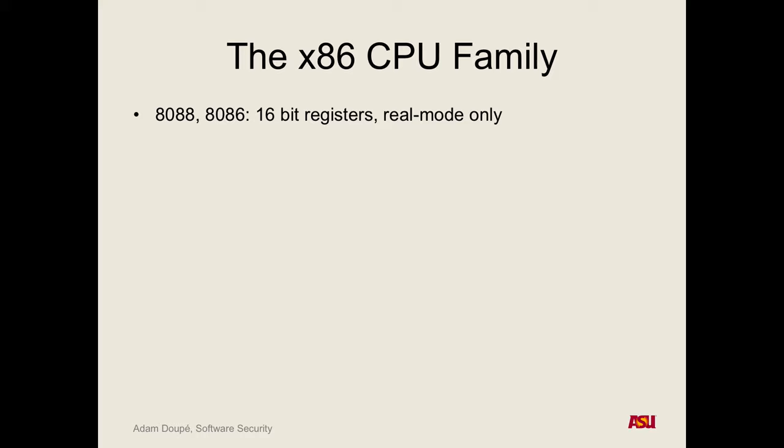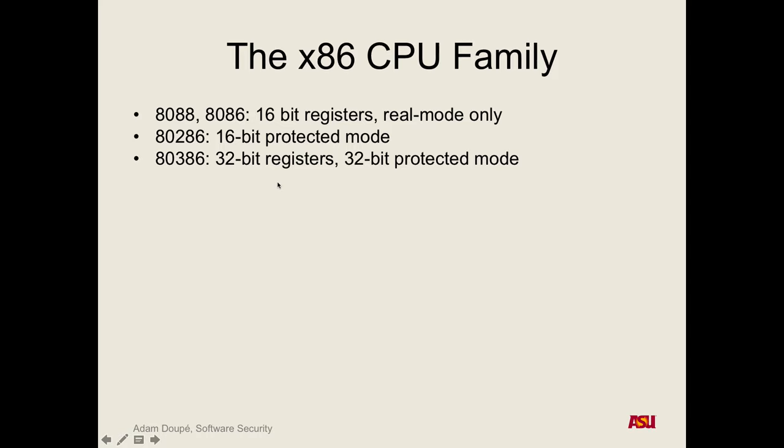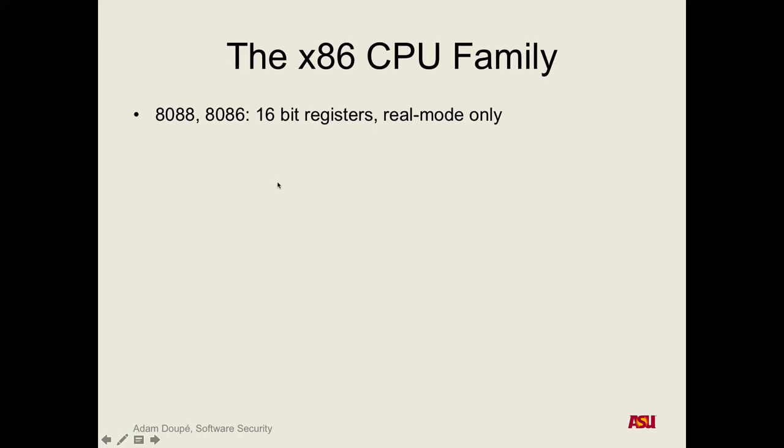This became the de facto standard of CPUs — most CPUs support x86. Eventually, 16 bits is not a lot. What's the main limitation? Memory size allocation — it's difficult to address more than 2 to the 16 bytes of memory. So eventually we moved to 32-bit registers.